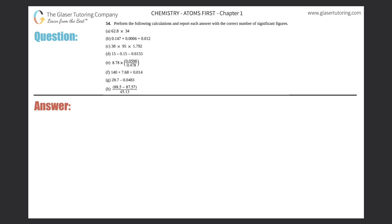Number 54: perform the following calculations and report each answer with the correct number of significant figures. We did a very similar problem with number 53, so if you want the whole backstory go check out number 53 before you do this one. This is going to be the quickened version. We have to deal with multiplication, division, addition, and subtraction with sig figs.